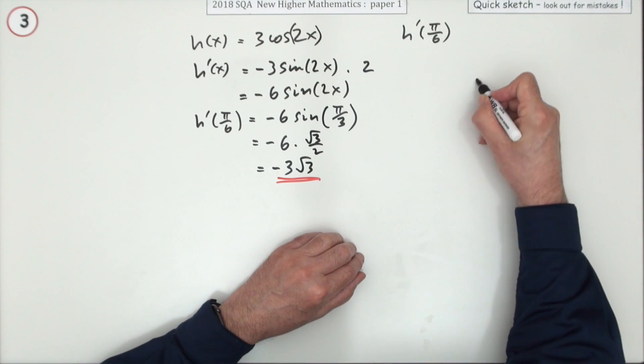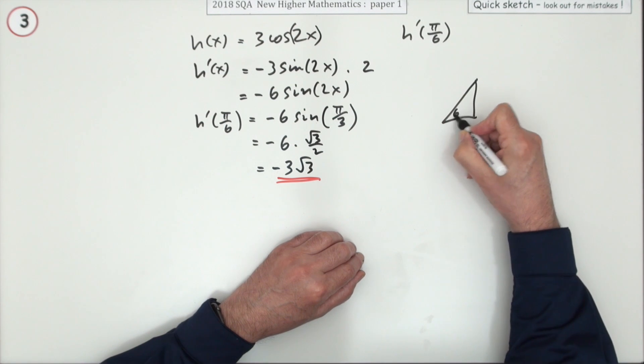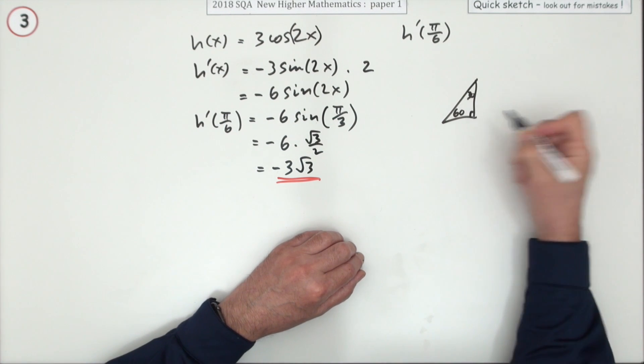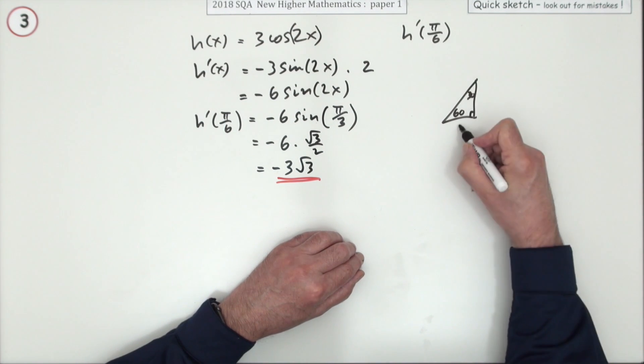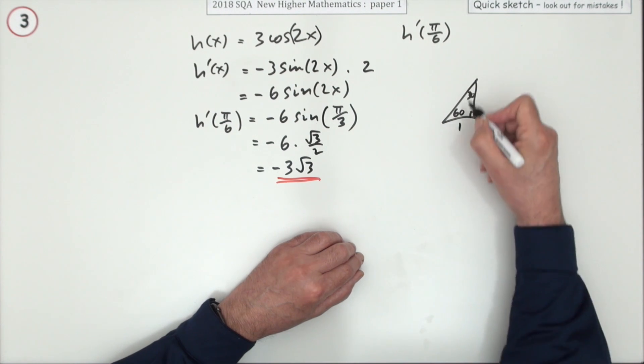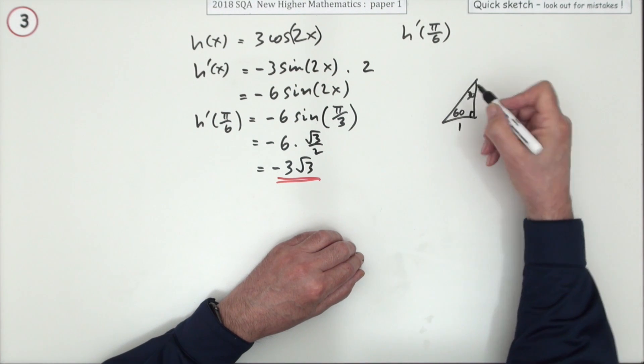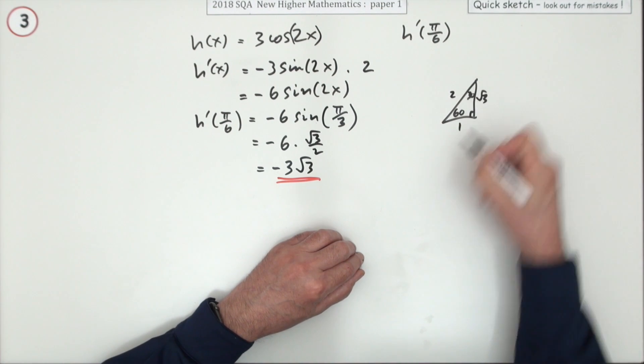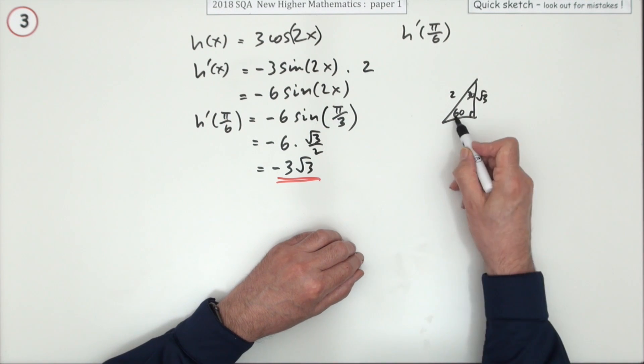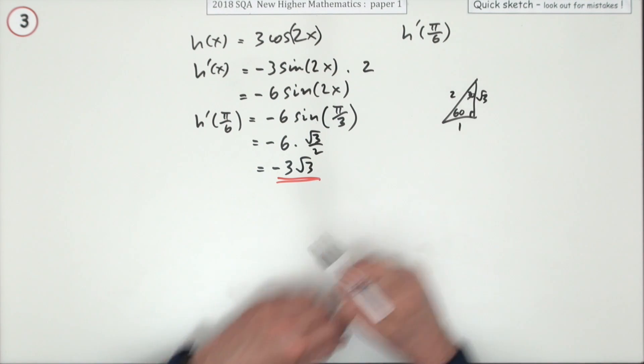If you couldn't remember that, you'd have to reconstruct your little 60-30 triangle, the 1-2-√3 triangle. One opposite the smallest angle, two opposite the biggest, that's the 90, so that's √3. So the sine of 60, opposite over hypotenuse, √3/2.